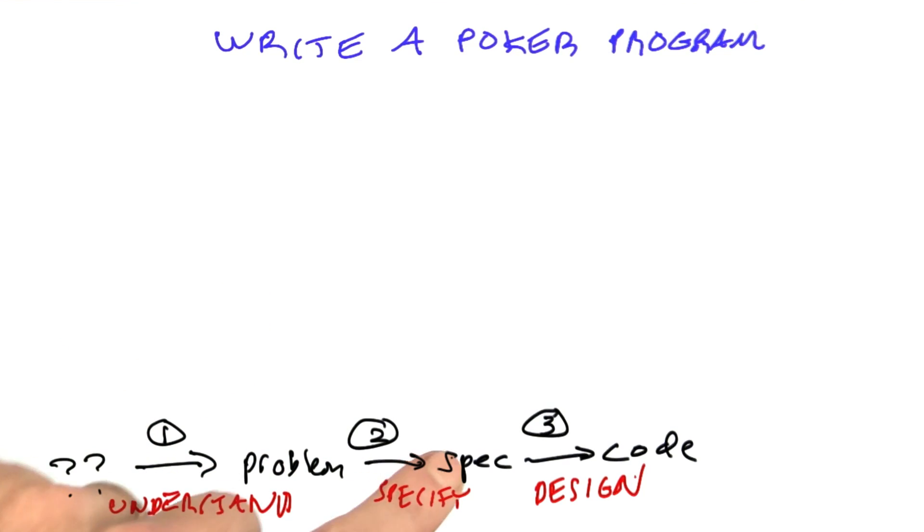Then we specify that into something that is amenable to being coded, and then the design process we end up with working code. We'll follow these steps 1, 2, 3. The first thing I want to do in the understanding phase is make an inventory of the concepts that we're going to have to deal with.